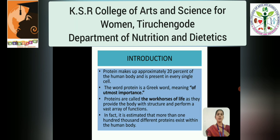Protein makes up approximately 20% of the human body and it is present in every single cell. The word protein is a Greek word meaning of utmost importance. Proteins are called the workhorses of life as they provide the body with structure and perform a vast array of functions. In fact, it is estimated that more than 100,000 different proteins exist within the human body.